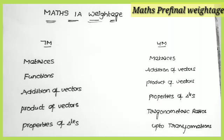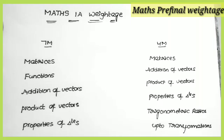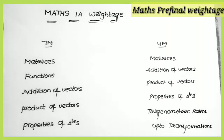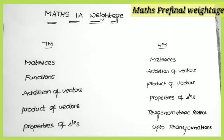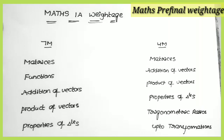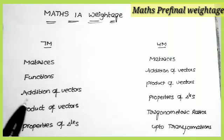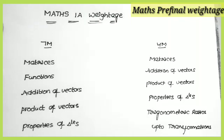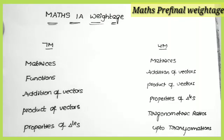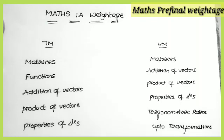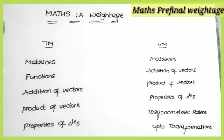This weightage will be very useful for those who want to gain marks — like 75 out of 75. So this weightage is shared here and the links are in the description — Maths 1A and 1B all important sums. Follow this weightage, prepare from the important list, and also the 2021 public examination question paper is shared in the description.